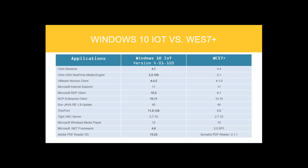Let's have a look at the features. Here we compared both versions of our Windows thin clients — the older Windows 7 Plus module and the new Windows 10 Internet of Things. Looking at the applications and receivers added in the new version: there's a Citrix Receiver version 4.7, the Citrix HDX Real-Time Media Engine up to version 2.2.100, and the VMware Horizon client version 4.4.2.